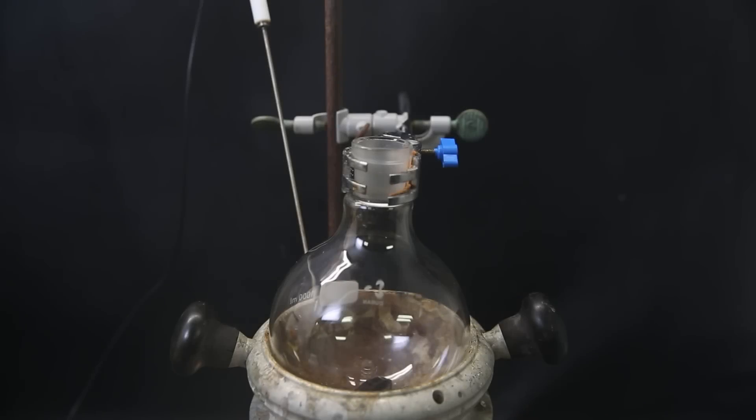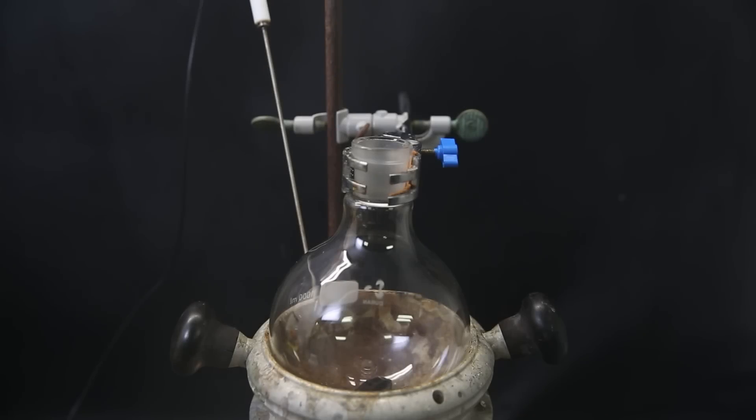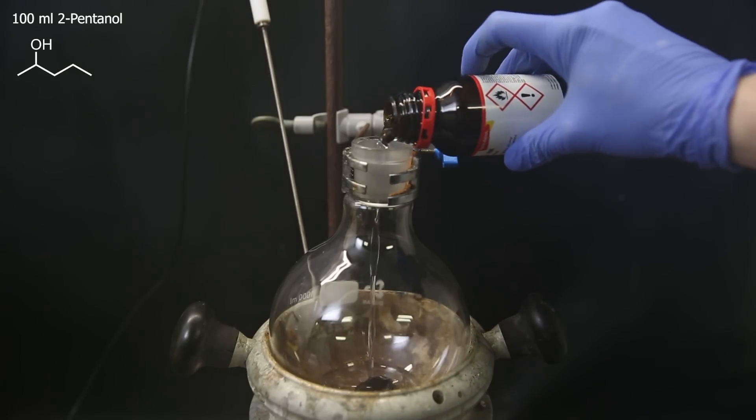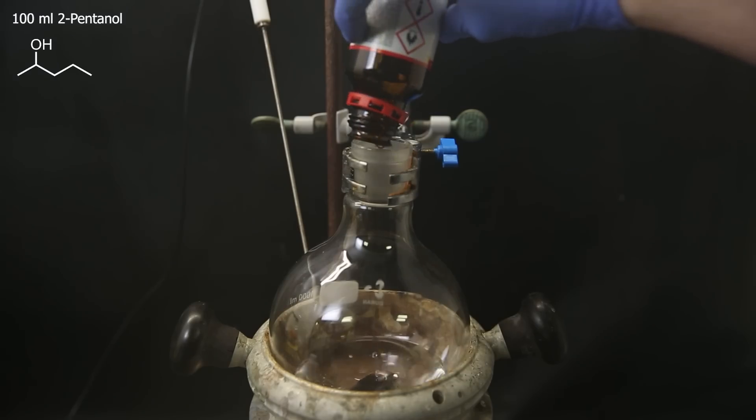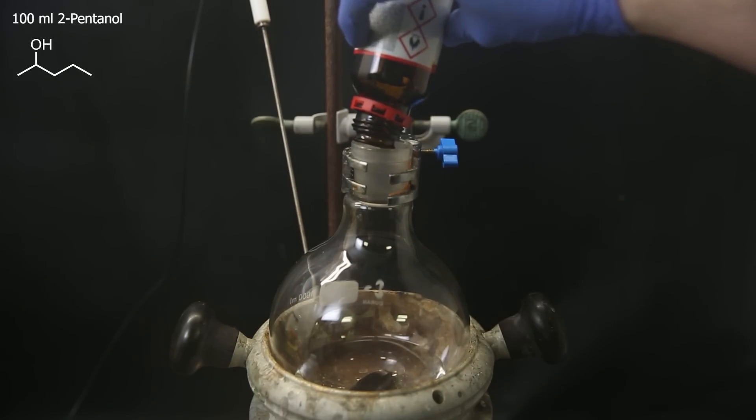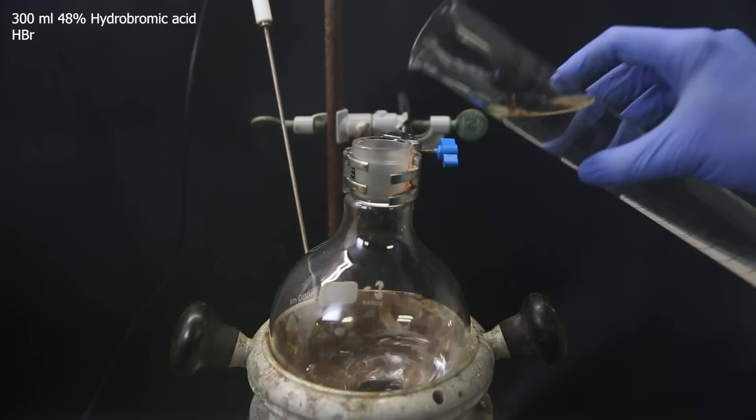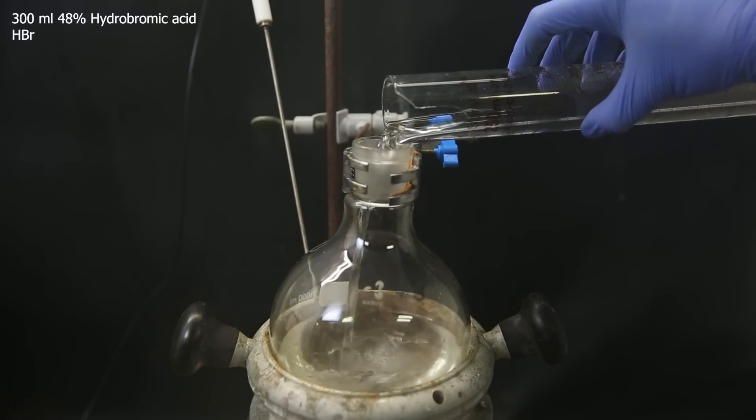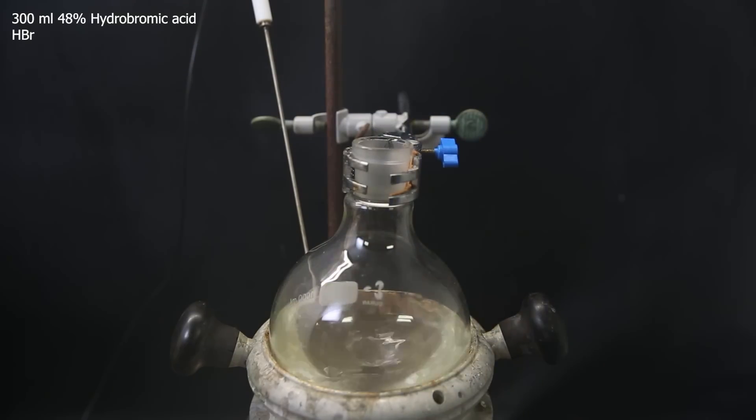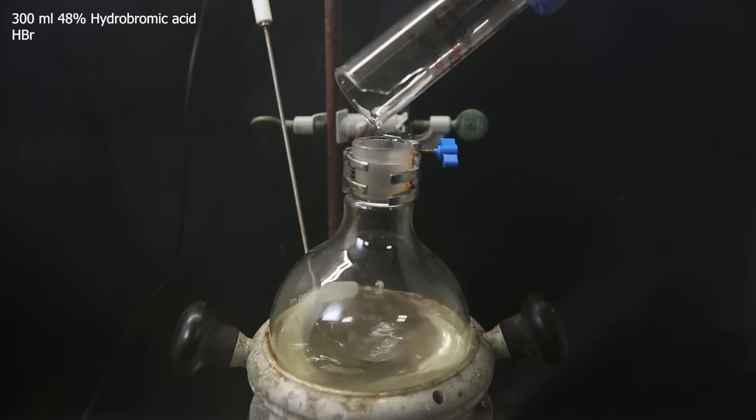So to get started, I set up a large flask with a stir bar and used the whole bottle of 2-pentanol that I bought, which is 100 ml. It is just a clear liquid, and it smells very similar to isopropanol. I then mix that with 300 ml of my slightly yellow 48% hydrobromic acid. I heat it to a reflux and attach a condenser, and then leave it like this overnight.